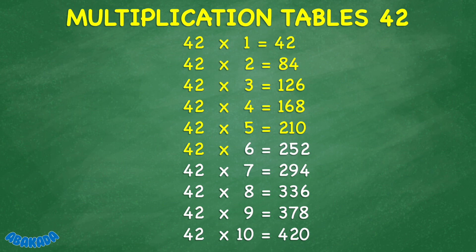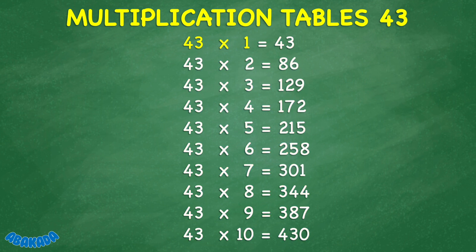42 times 6 equals 252. 42 times 7 equals 294. 42 times 8 equals 336. 42 times 9 equals 378. 42 times 10 equals 420. 43 times 1 equals 43. 43 times 2 equals 86. 43 times 3 equals 129.